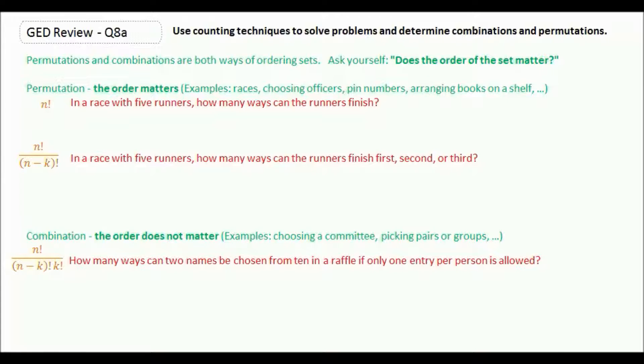Two things can happen with permutation. We can either order everything in the set, or we can just choose to take a couple things from the set and order those. In our first example, it says in a race with five runners, how many ways can the runners finish? So in this case, we're ordering all five runners.